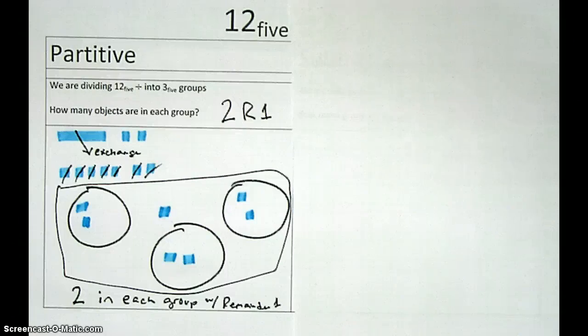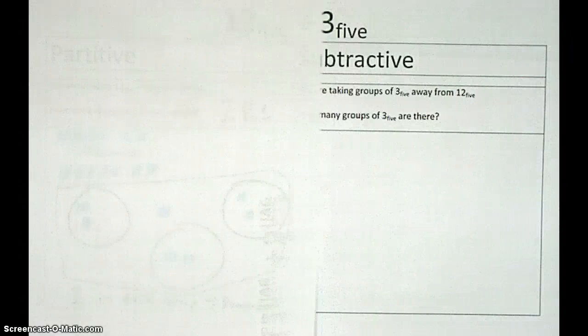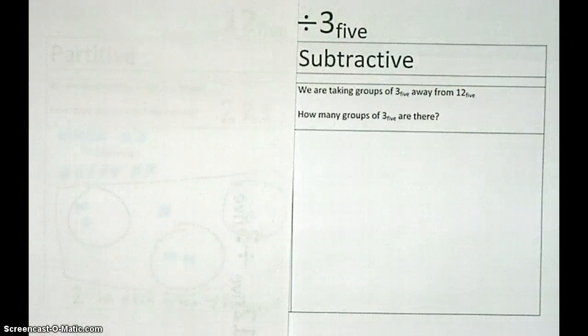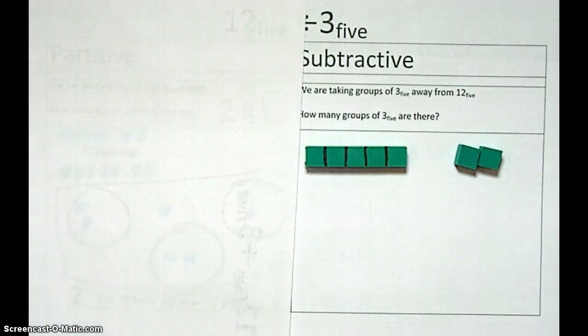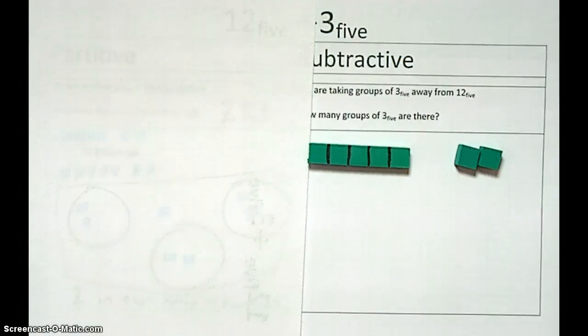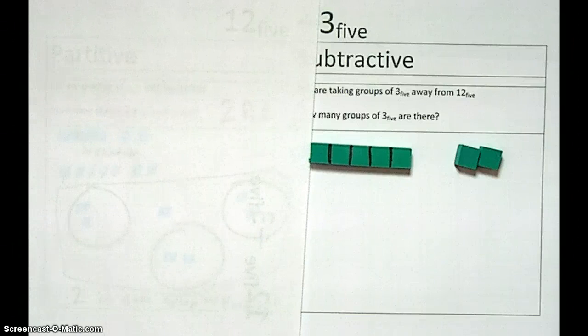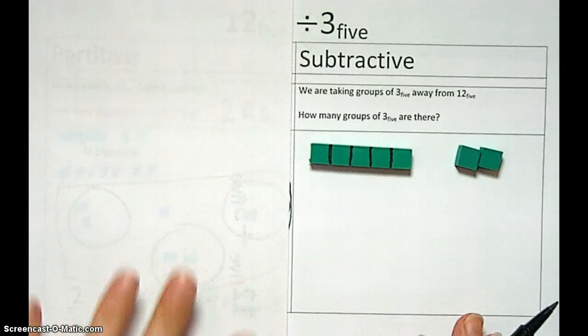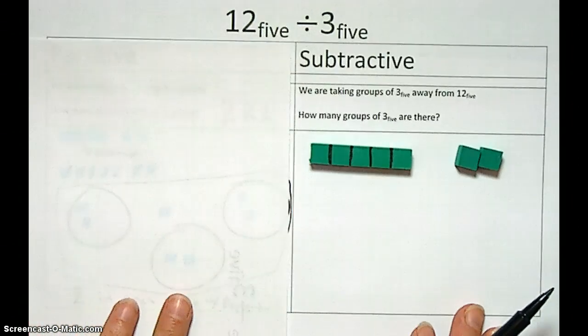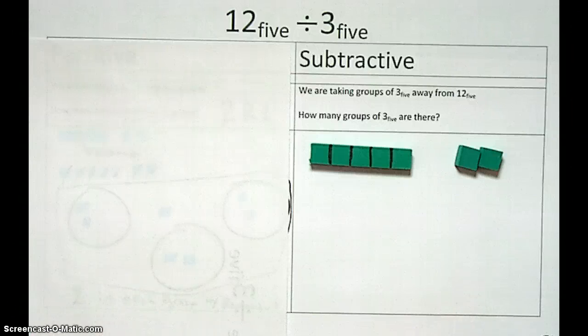Okay. Now we're going to go over and do the same problem with the subtractive technique. Over here. So let's get the same thing set up. Here's our 1, 2, base 5. And we're going to need to figure out what exactly the problem is here. Same thing. It's 1, 2, base 5 divided by 3, base 5. But this time we're going to look at it from a subtractive approach.